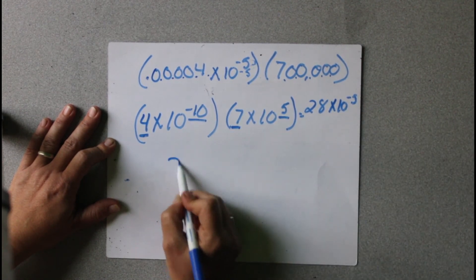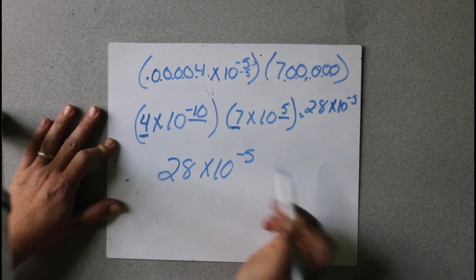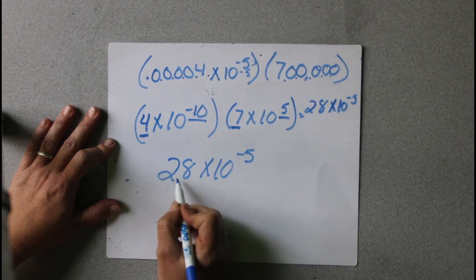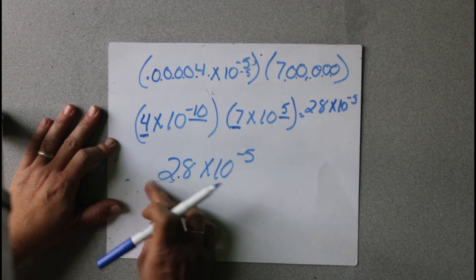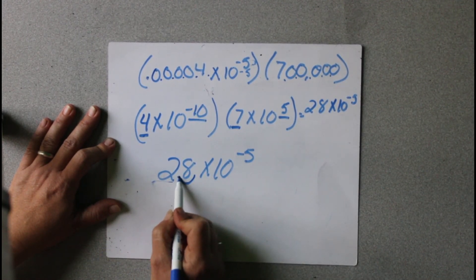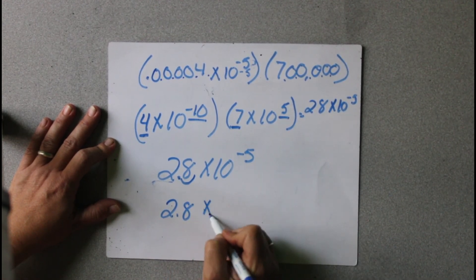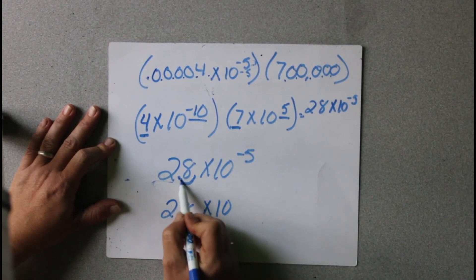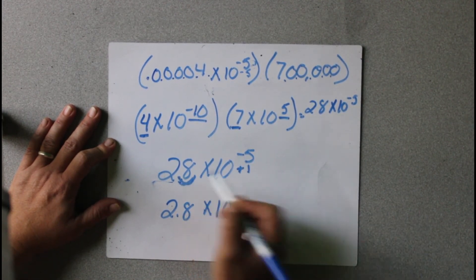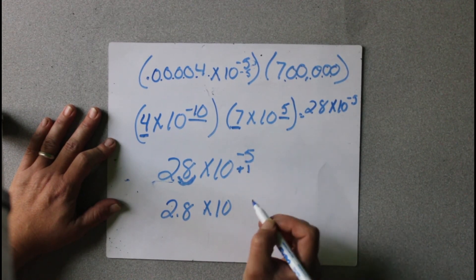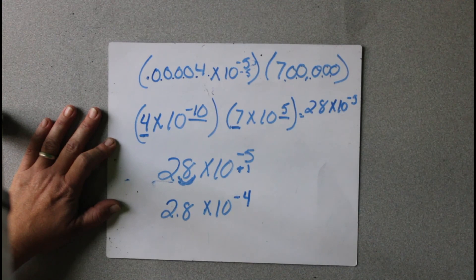Now that is not the final answer, because 28 is not proper scientific notation — we can only have one number before our decimal. So we have to move our decimal there: it's going to be 2.8 times 10. And this movement was a positive 1 movement, so that would be to the negative 4th. So 2.8 times 10 to the negative 4th.